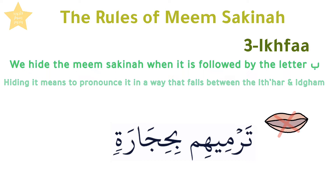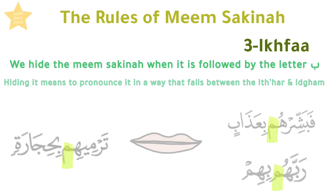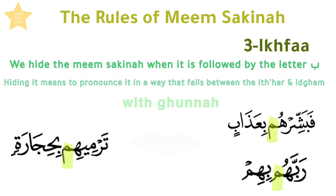The correct way is like so. Every Meem Sakinah in the Mushaf that comes before Ba is written without a haraka, and we recite it with a Ghunna without pressing the lips together tightly. Fabashhirhum bi'azaab. Inna rabbahum bi'him.